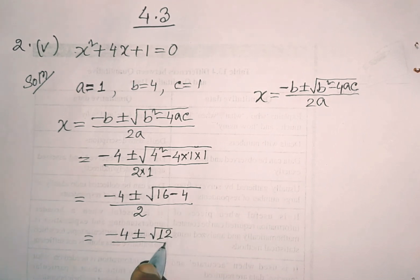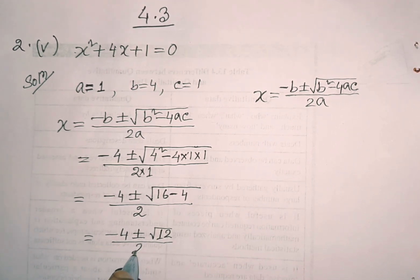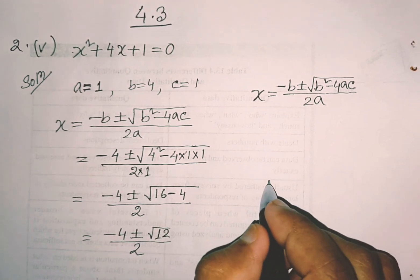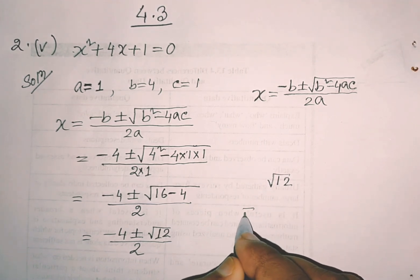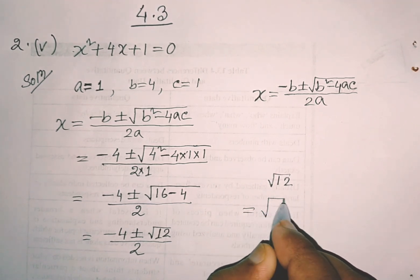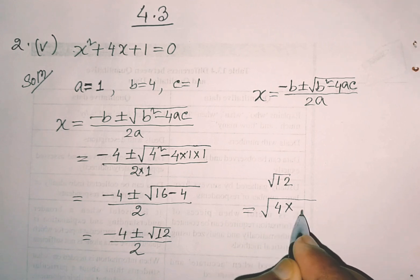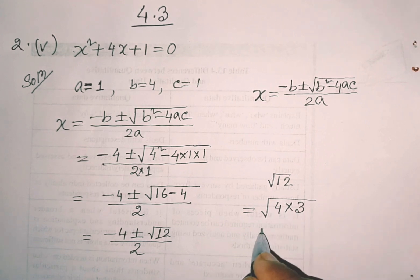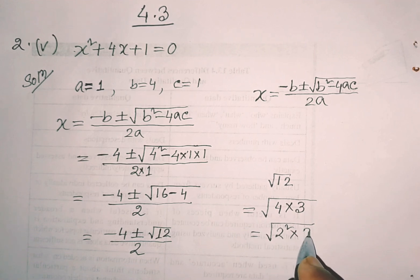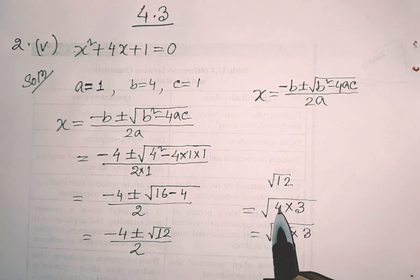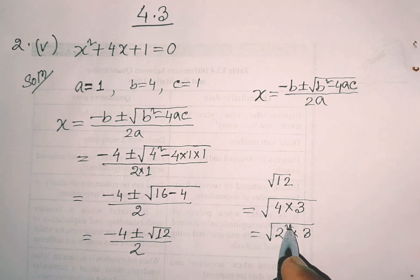Divided by 2. So, root 12 is 4 into 3. If you have to write root 12, it is 4 into 3.